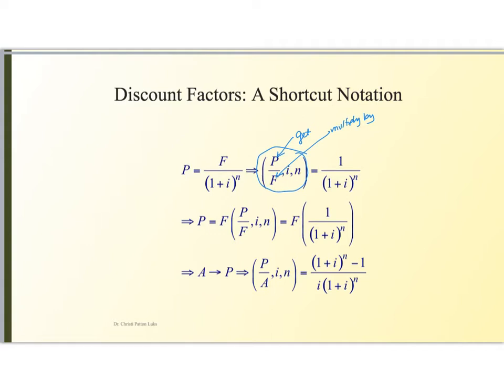And so this formula says it's one over one plus i to the nth power. I can do this for any of these but for instance to go from an annuity to a present value I'm going to use the discount factor P over A I'm going to get the present value if I multiply by the annuity amount for the interest rate and number of periods here. And the formula says I'm going to multiply by one plus i to the nth power minus one over i times one plus i to the nth power.